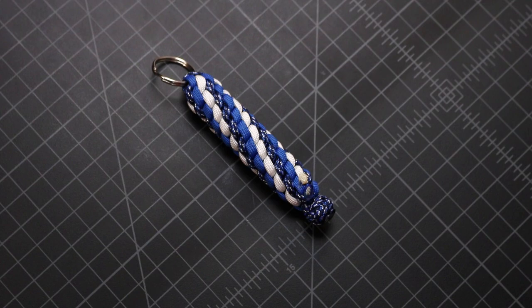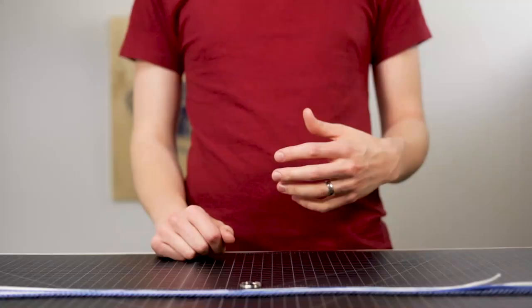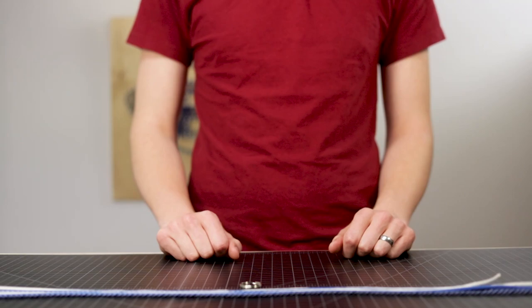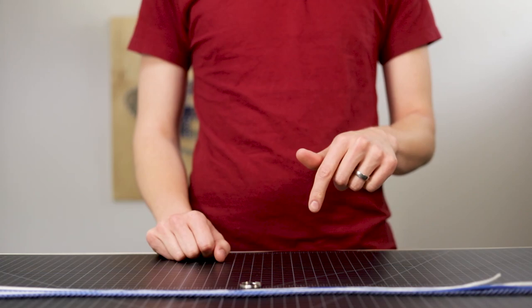It's going to be using a six strand sinnet knot. It's a method that we've used before for some different projects like the Paracord Cactus. And the method for this keychain is taken from tying it all together. We'll link to his channel in the description. Let's dive right in.